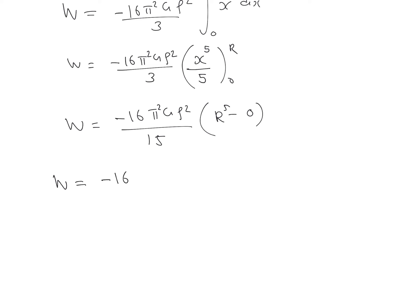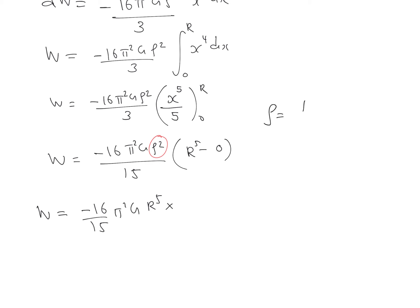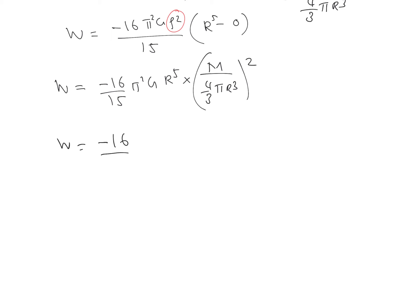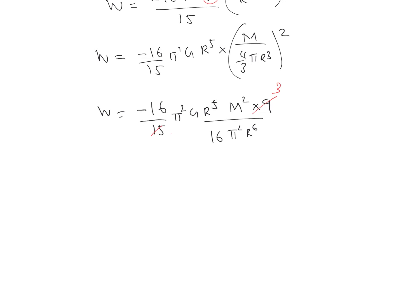Now substituting the density ρ = M / (4/3)πR³, so ρ² = M² / (16π²R⁶/9). Putting this into the expression: W = −(16/15)π²G × R⁵ × M² × 9 / (16π²R⁶). The 16 and 16 cancel, π² and π² cancel, R⁵ and R⁵ cancel leaving one R in the denominator, and 9/3 gives 3/5.